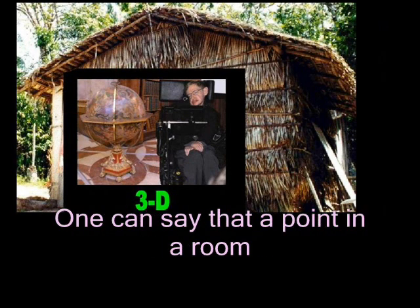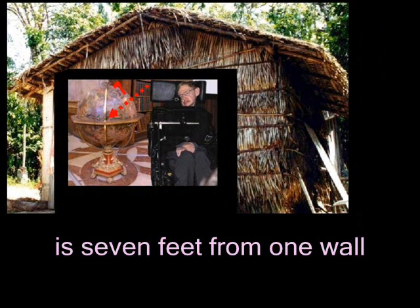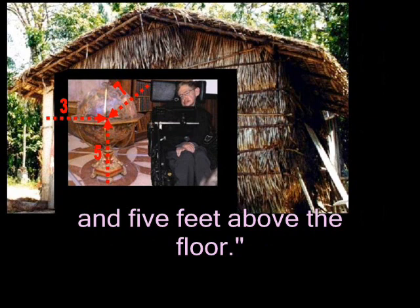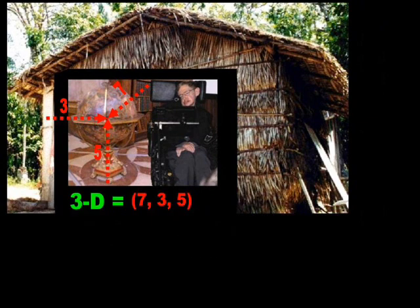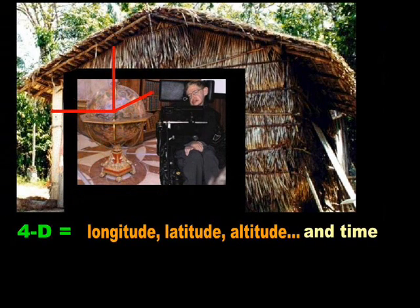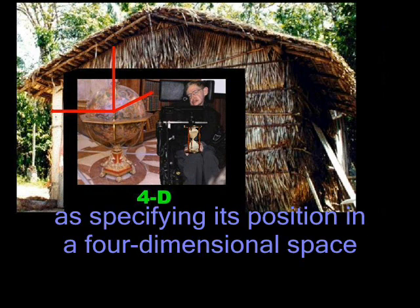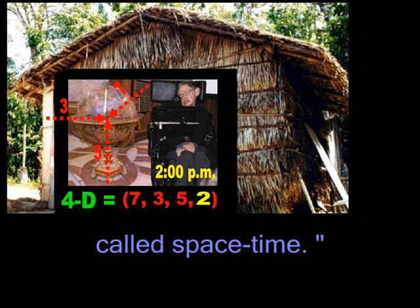One can say that a point in a room is seven feet from one wall, three feet from another, and five feet above the floor. And if he includes time, Hawking believes that his living room suddenly becomes four dimensional. It is often helpful to think of the four coordinates of an event as specifying its position in a four-dimensional space called space-time.